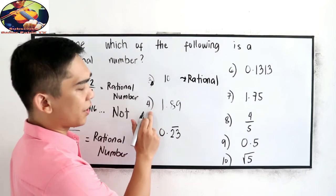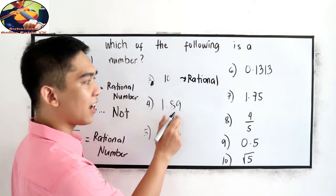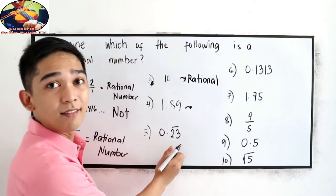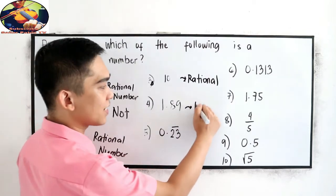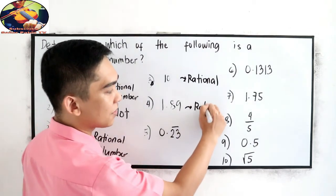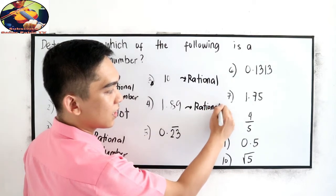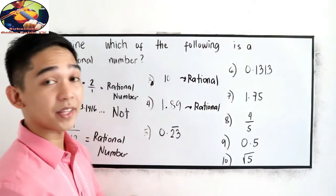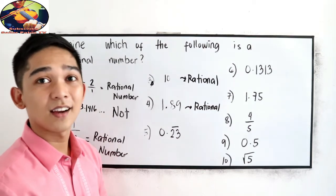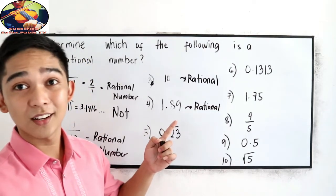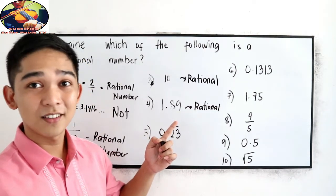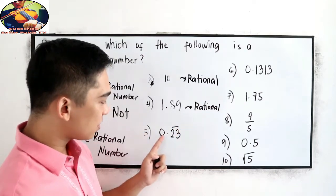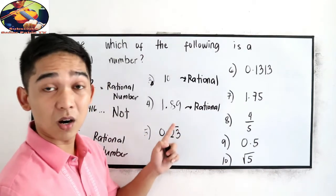Number 4: 1.89. It is a rational number, because 1.89 can be written in rational form. Number 5: 0.23 with a bar. This is a rational number as well.